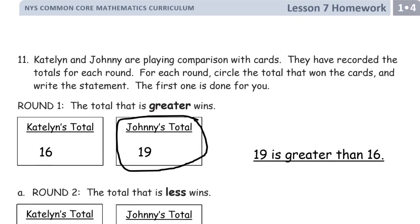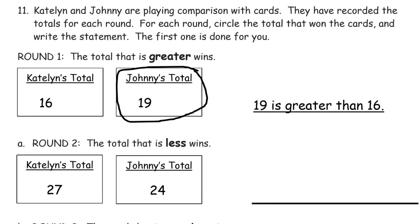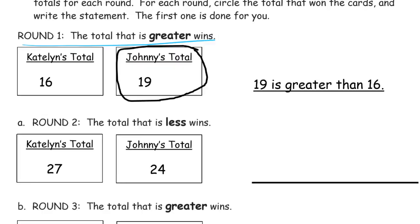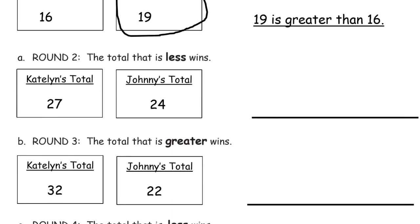And we have a bonus page. Caitlin and Johnny are playing comparison with cards. They have recorded the totals for each round. For each round, circle the total that won the cards and write the statement. The first one is done for you. In round one the total that is greater wins. Here's the next one. Notice here it says the total that is less is the one who wins. So that means Johnny's going to win again because 24 is less than 27.